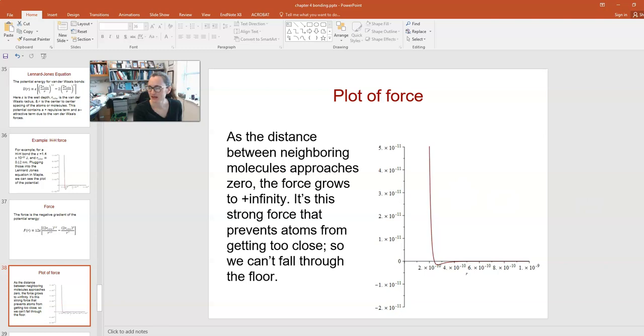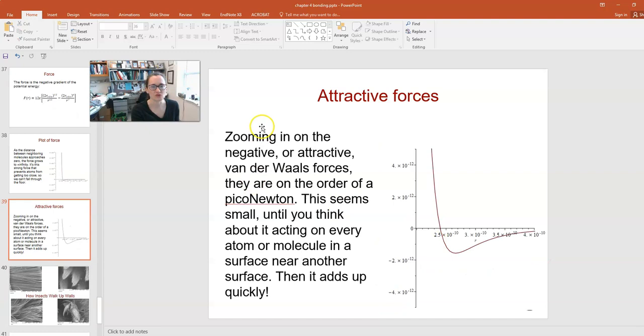But if you look down here at the bottom of the curve, there are also negative forces, which implies an attractive force. If you zoom in on that part of the plot, the negative or attractive van der Waals forces are on the order for this hydrogen-hydrogen bond of about a pico Newton. That doesn't seem like very much, but if you think about it acting on every atom or molecule in a surface near another surface, and you think about how many atoms or molecules there are when two things touch, it can actually add up quite quickly. If you compared the force of gravity on an atom or molecule to the van der Waals force, the van der Waals force would be many orders of magnitude larger.